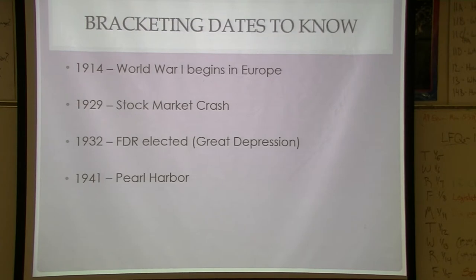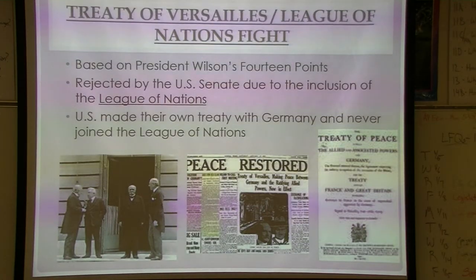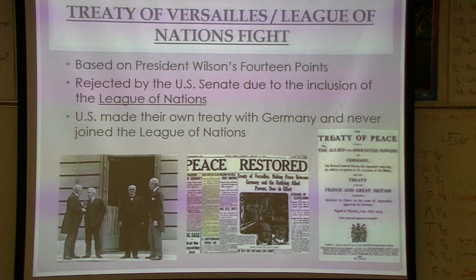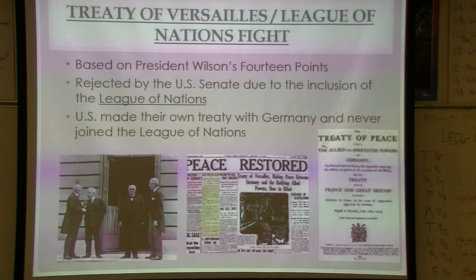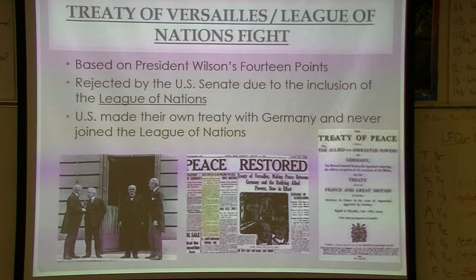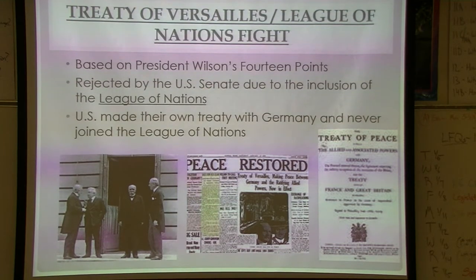The bracketing dates for the 20s look at the aftermath of World War I through the stock market crash, then the 30s with the Great Depression. World War I ended, and on your EOC you will probably have a question dealing with the League of Nations, the Treaty of Versailles, and the 14 Points — they're all interconnected. President Wilson came up with the 14 Points. The United States will actually never sign the Treaty of Versailles; we will make our own separate treaty and never join the League of Nations.